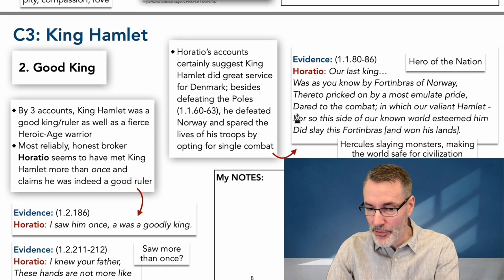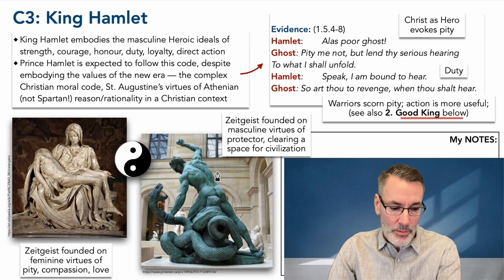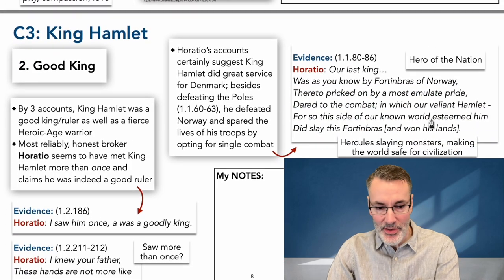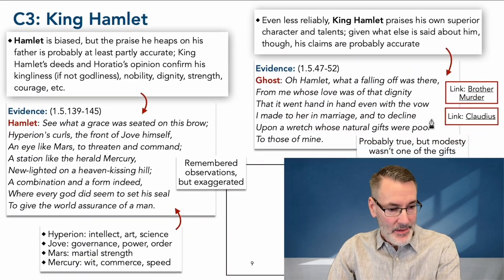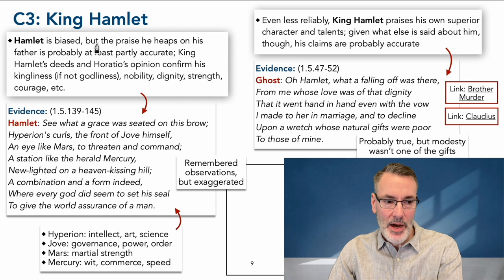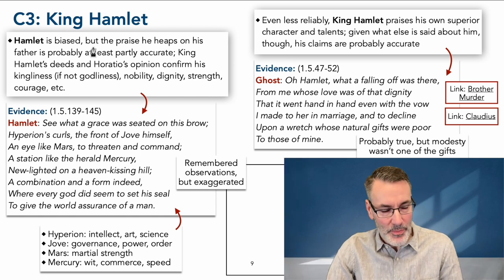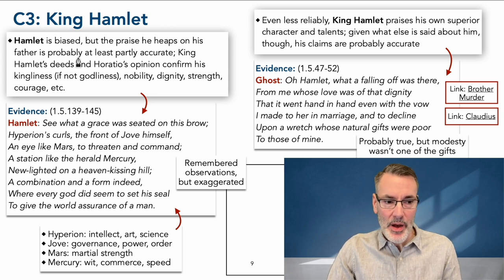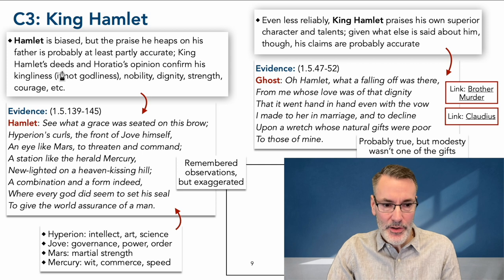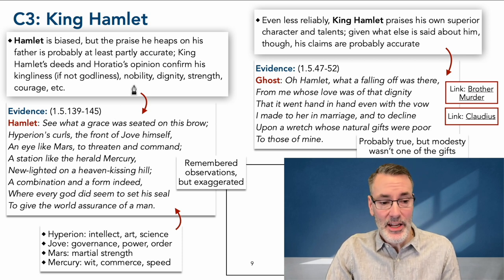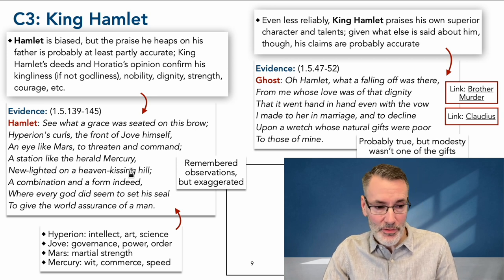He's like Hercules slaying the monsters, making the world safe for civilization — going out alone, not sending his troops. Now, Hamlet is certainly biased because King Hamlet is his father whom he idealizes unhealthily. But the praise he heaps on his father is probably at least partly true. King Hamlet's deeds and Horatio's opinion confirm his kingliness — if not his godliness, Hamlet thinks he's a god — and confirm his nobility, dignity, strength, courage, and justice. So here's Hamlet describing his father. It's exaggerated, way over the top, because Hamlet has a pathological relationship with his father.